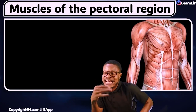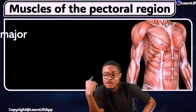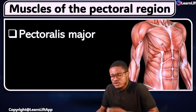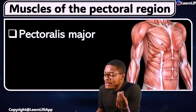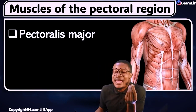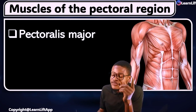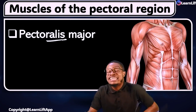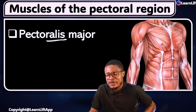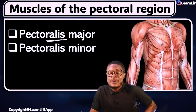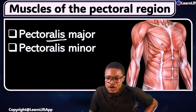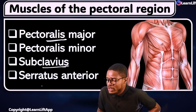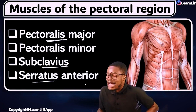The muscles are not plenty — there are just 4 of them. Number 1 is called the pectoralis major. Number 2 is the pectoralis minor. Number 3 is called the subclavius. And number 4 is called the serratus anterior.